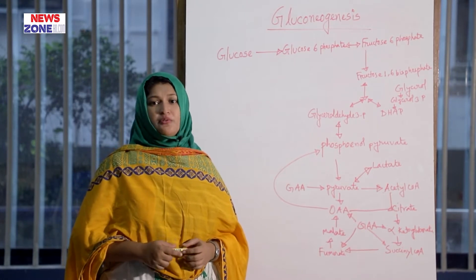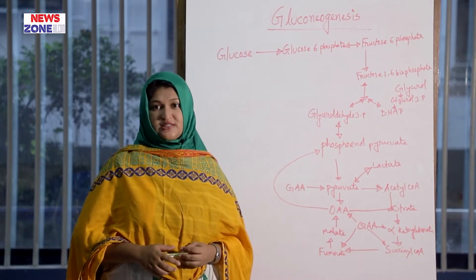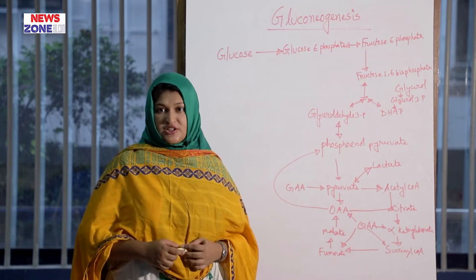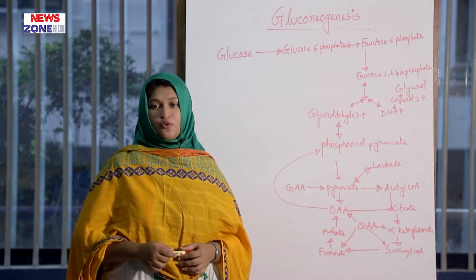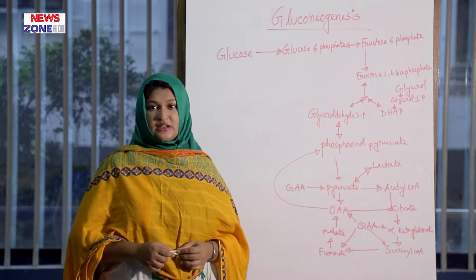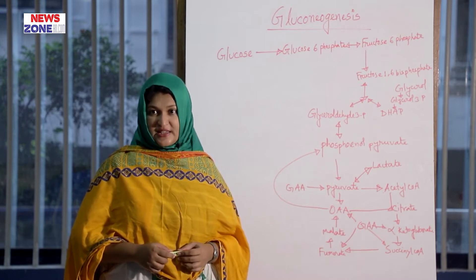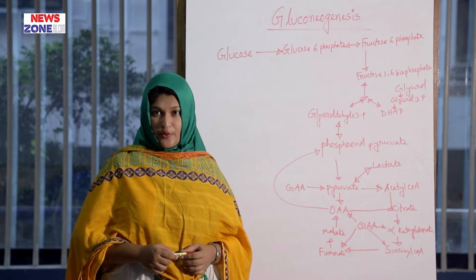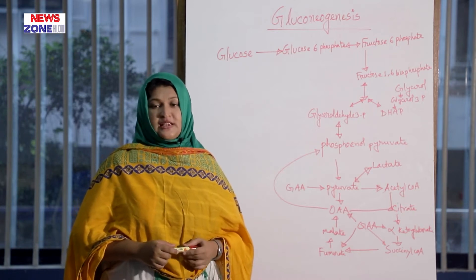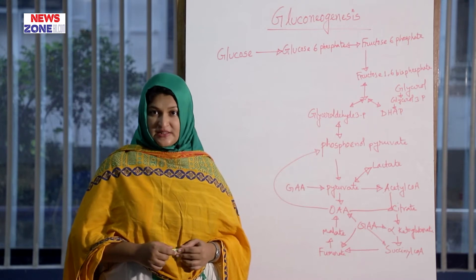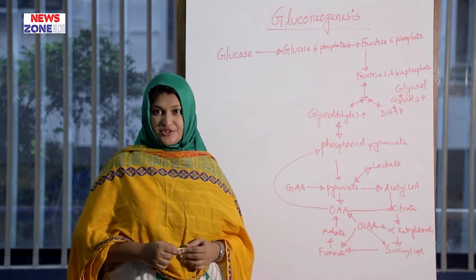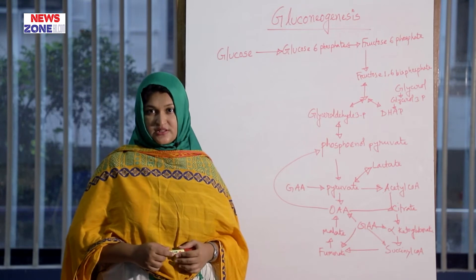For gluconeogenesis, the main substrates are glucogenic amino acids, pyruvate, lactate, glycerol, intermediaries of the TCA cycle, and propionyl-CoA. The main product is glucose, which will be synthesized from these non-carbohydrate sources.